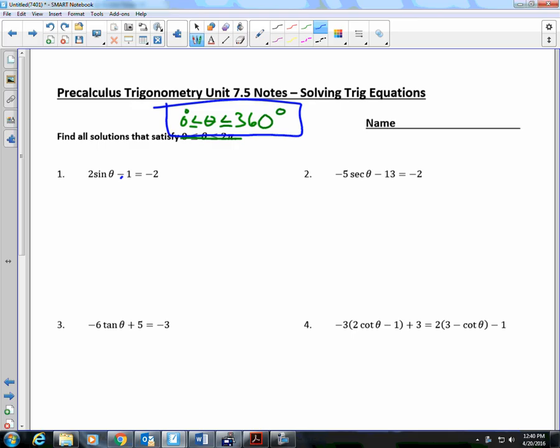We start with 2sin(θ) - 1 = -2. How do you think you solve that? You add the 1. 2sin(θ) = -1. What do you think you do next? You divide by 2. So far, it's pretty easy. sin(θ) = -1/2.